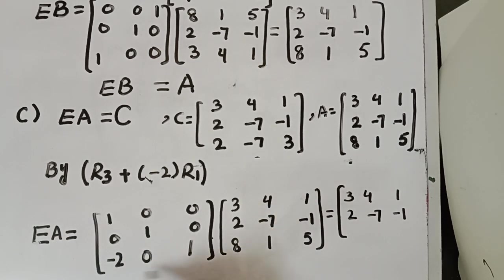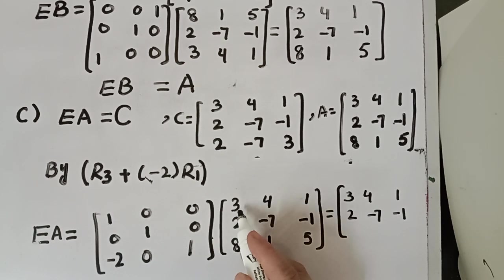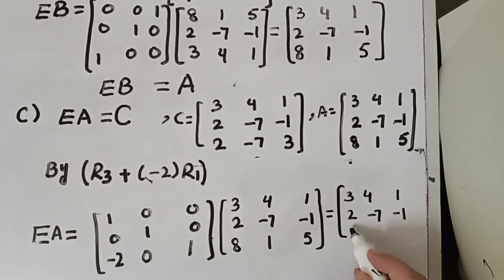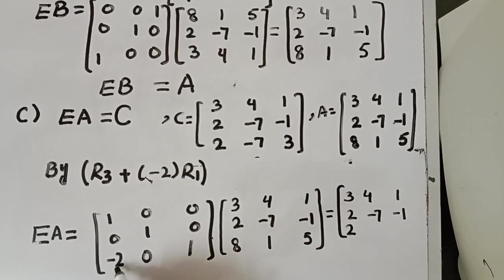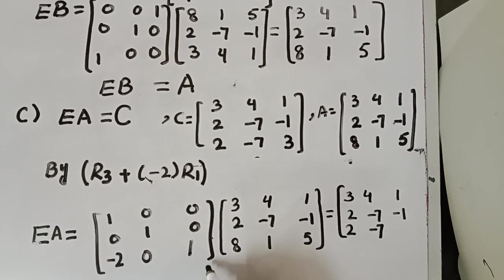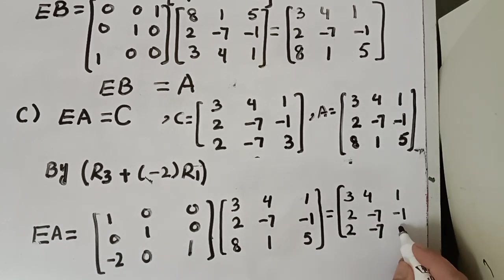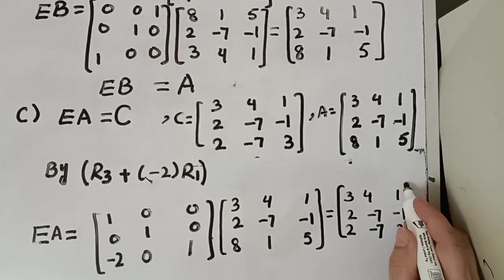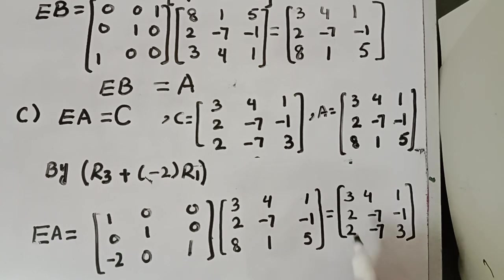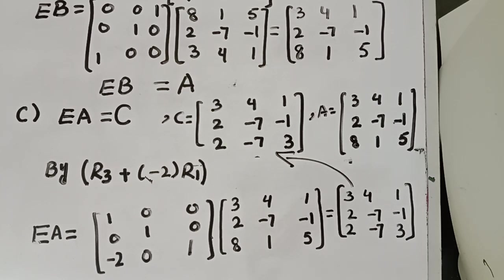Third row with first column: negative 2 times 3 is negative 6, plus 8 gives 2. Third row with second column: negative 8 plus 1 gives negative 7. Third row with third column: negative 2 plus 5 gives 3. If you check this product resultant and compare it with matrix C, you can see the resultant is exactly equal to matrix C.